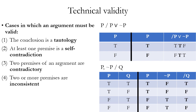Now let's look at technically valid arguments. A technically valid argument is one in which it's impossible for the argument to be invalid based on some property of the conclusion or the premises. There are four ways an argument can be technically valid. The first is when the conclusion is a tautology — true on every row of the truth table, so it's impossible to have a true premise and a false conclusion.